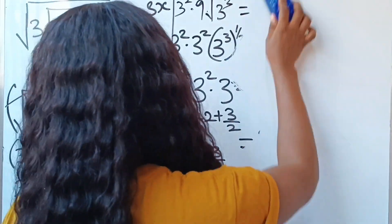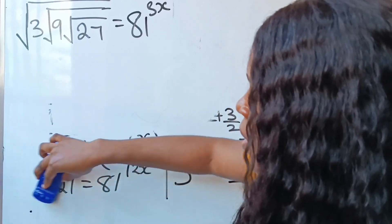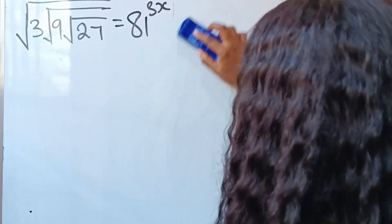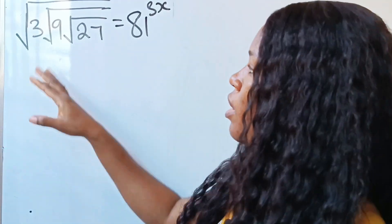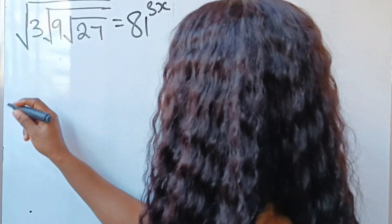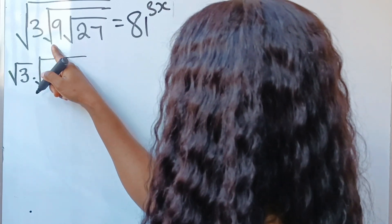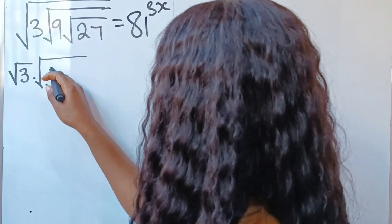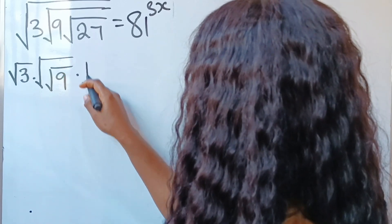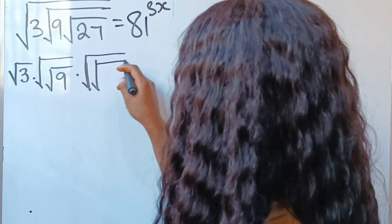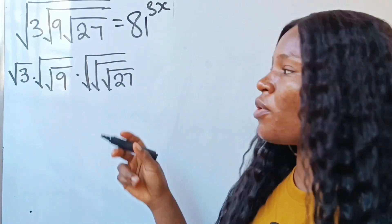Like I said, the second method is actually very interesting — straight to the point, we are not going to waste time. We are going to bring out the expression as it is. This simply means square root of 3, multiplied by square root of square root of 9, multiplied by square root of square root of square root of 27 — that's three nested roots above 27 — is equal to 81 to the power of 3x.